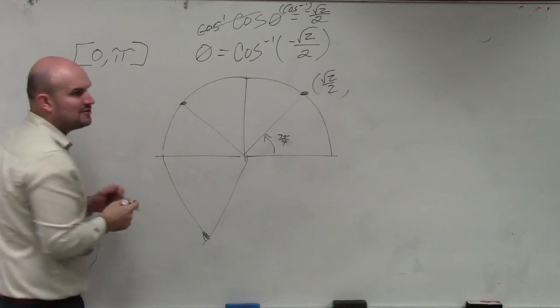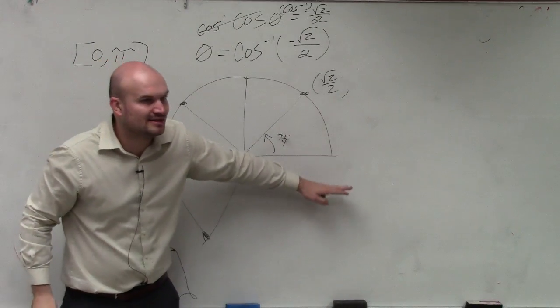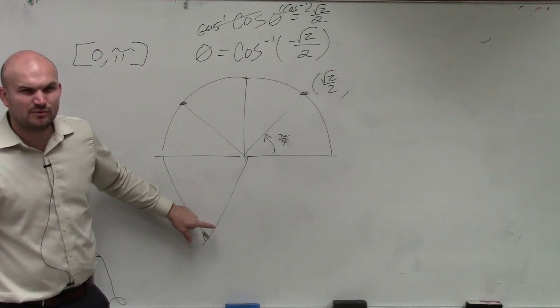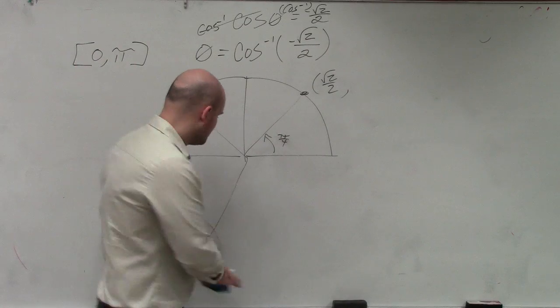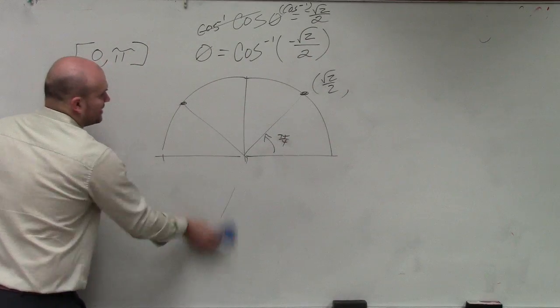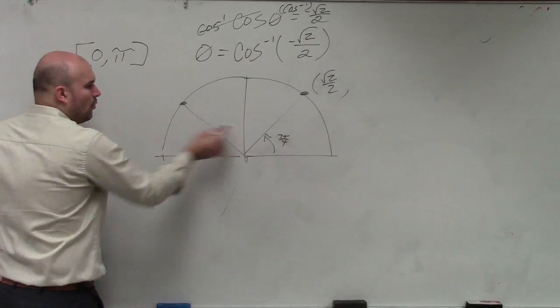But the problem is, remember, what does my restriction have to be? It has to be between 0 and π. So does this point even work? No. Now, so if this is π over 4, what the heck point is this?